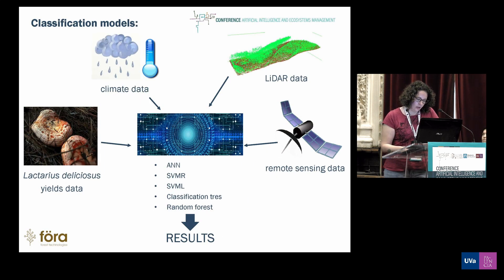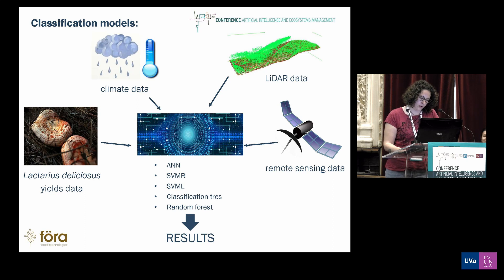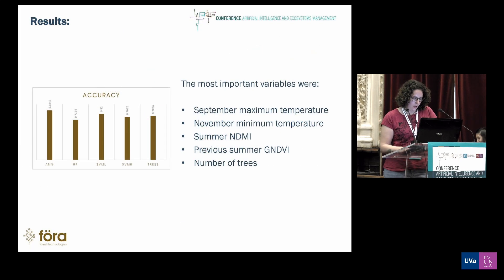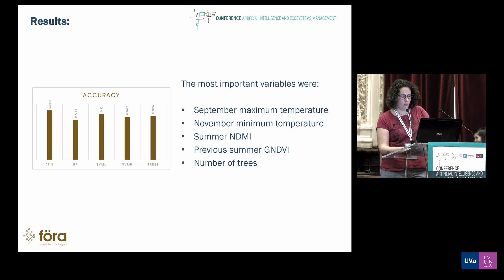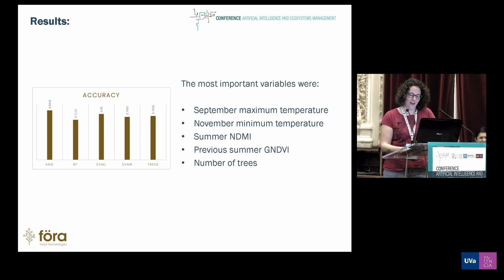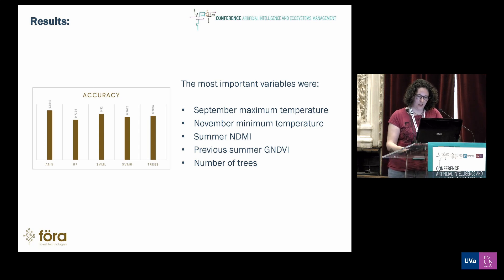With all the data collected, we built five classification models: neural networks, support vector machine with radial kernel, support vector machine with linear kernel, classification trees, and random forests. The best classification model was the neural network model. The most important variables were September maximum temperature, November minimum temperature, the previous summer NDVI, and number of trees.